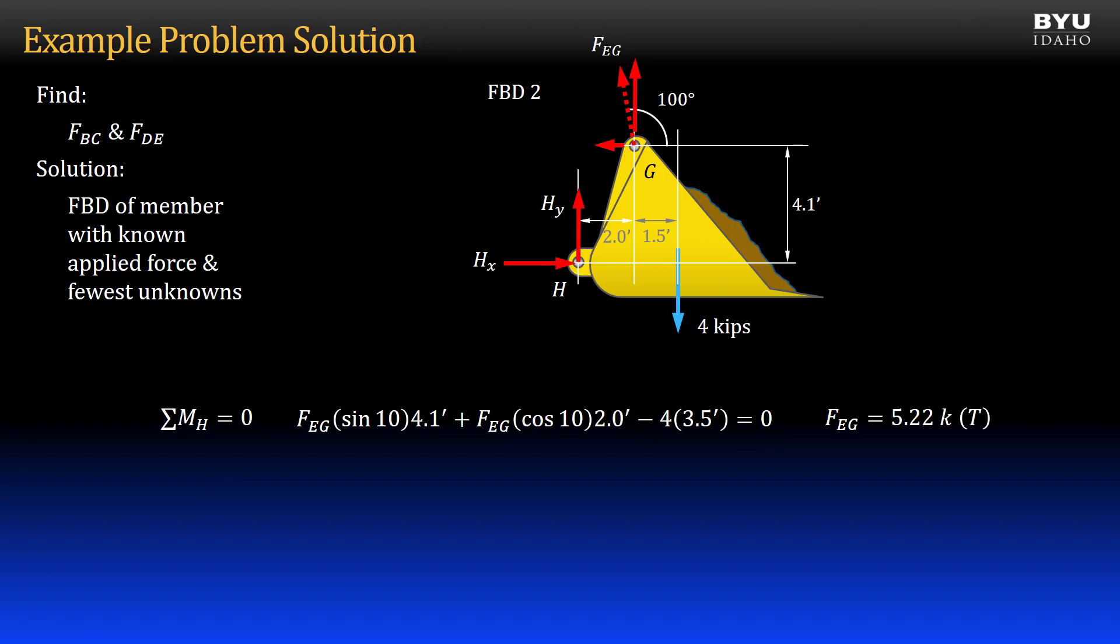I get that force EG is positive 5.22 kips. So the two-force member is in tension, as shown in my free body diagram. I don't need the reaction forces at H to finish this problem, but I will get them anyway by summing forces in the X direction and by summing forces in the Y direction.